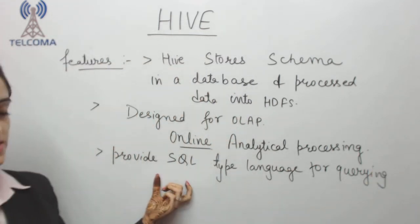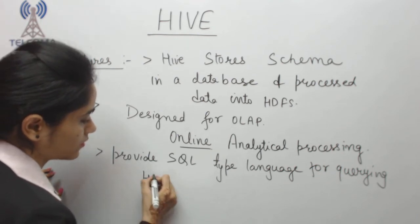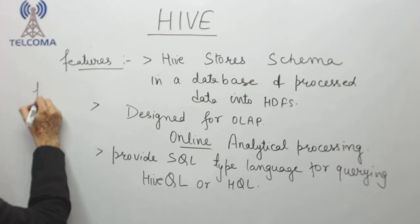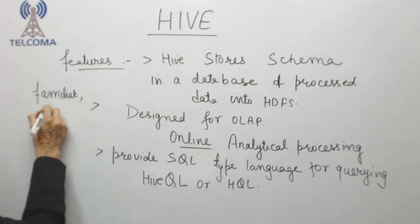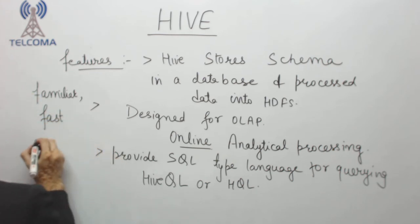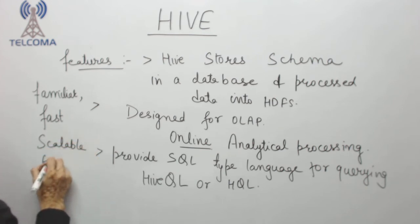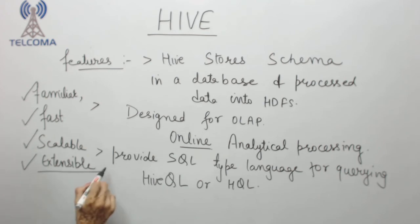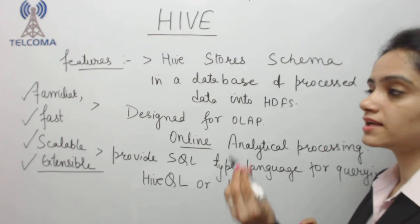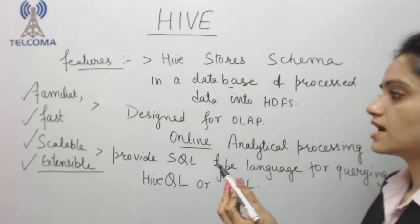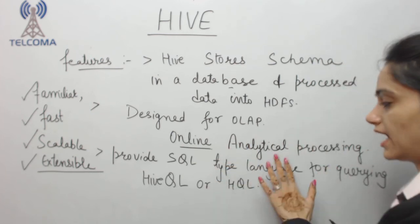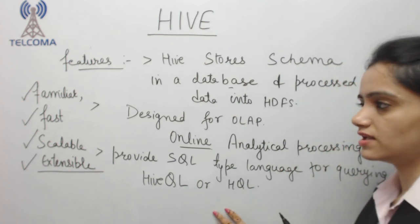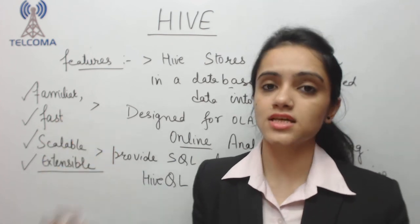Hive provides a SQL-type language for querying purposes called HiveQL, or HQL — the Hive Query Language. Hive is also familiar, fast, scalable, and extensible. So the features of Hive are: it stores schema in a database and processes data into HDFS, it is designed for online analytical processing, it provides HiveQL, and it is familiar, fast, scalable, and extensible.